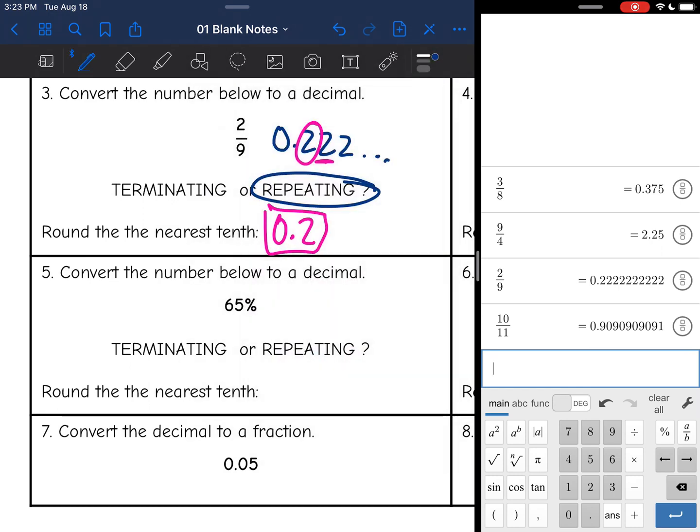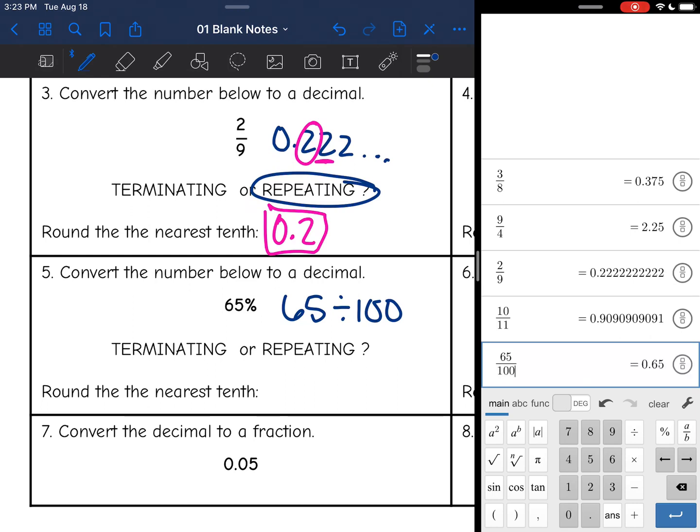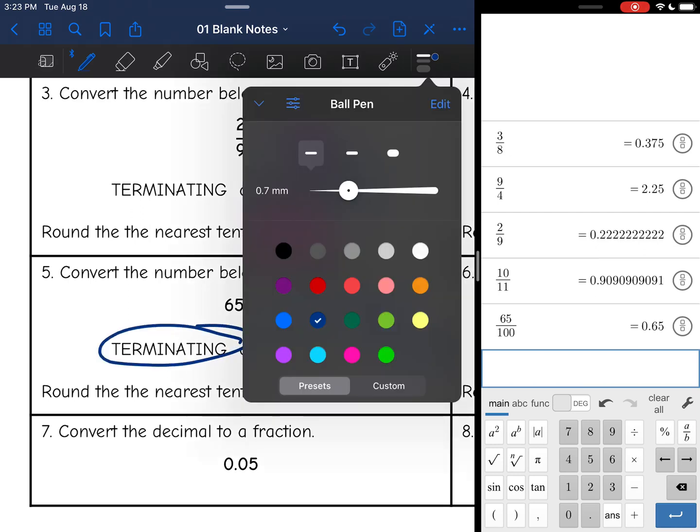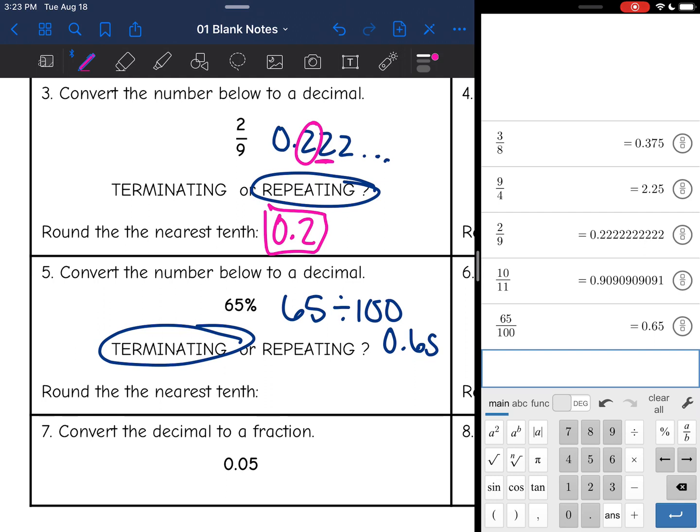So 65 percent, I'm going to do 65 divided by 100 to get that decimal. 65 divided by 100 is 0.65. That stops, so it's terminating. And I need to round it to the nearest tenth, which is that 6. And since there's a 5 after the 6, I'll round the 6 up. So 65 percent rounded to the nearest tenth is 0.7.